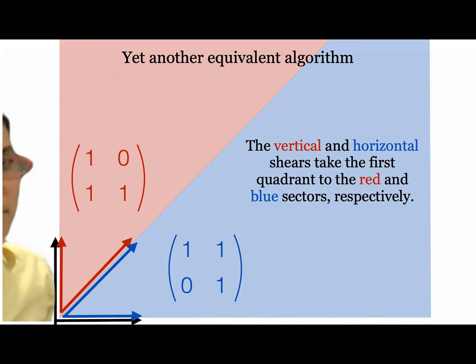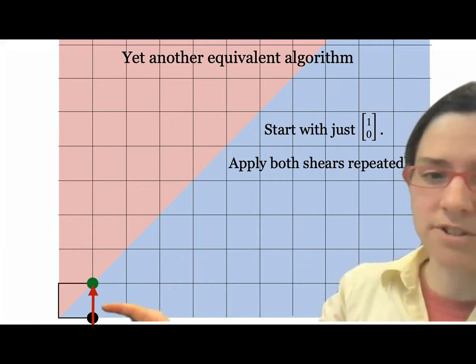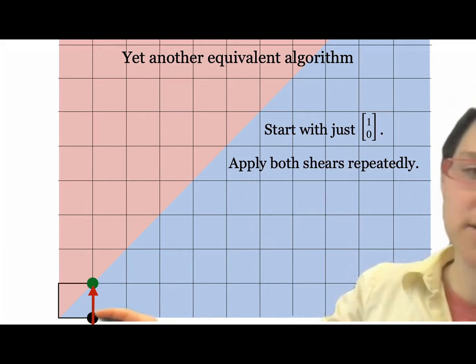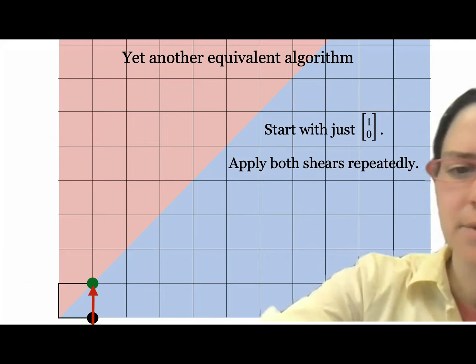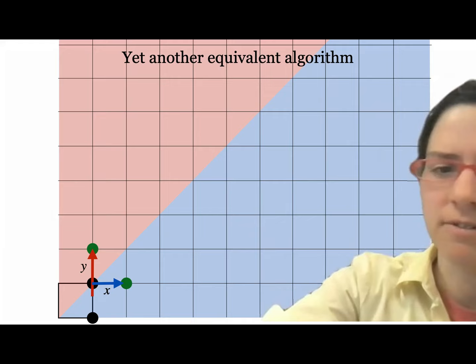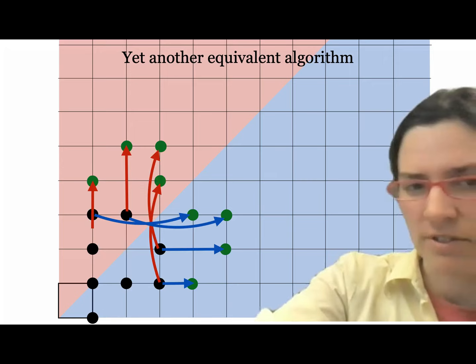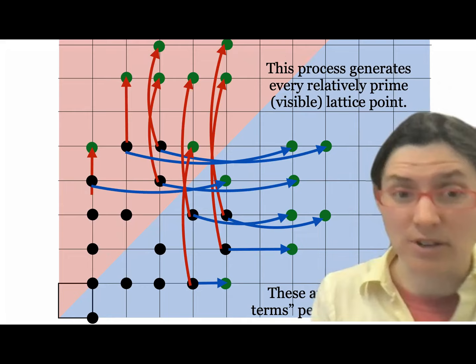The idea is generative: start with the simplest possible thing, the vector (1,0), and apply both shears. Applying a horizontal shear to this point does nothing; applying a vertical shear moves it up by one, giving a new green point. We apply both shears again to get two new green points. Do it again: each point generates two new points. Continuing, we generate all relatively prime lattice points.